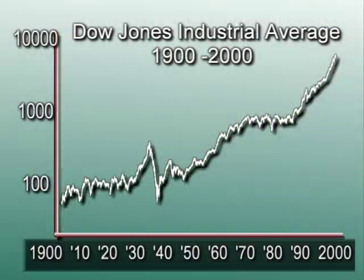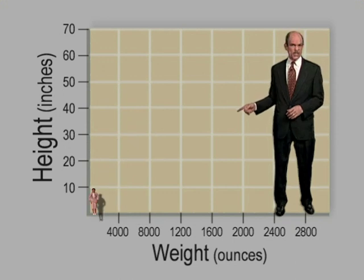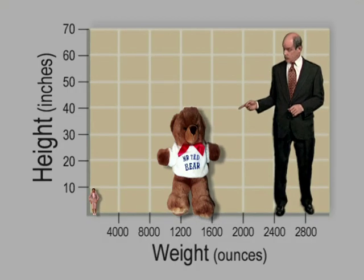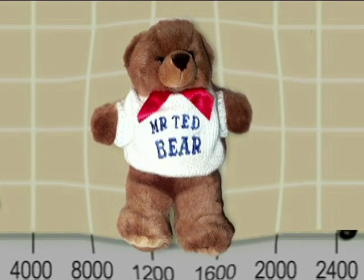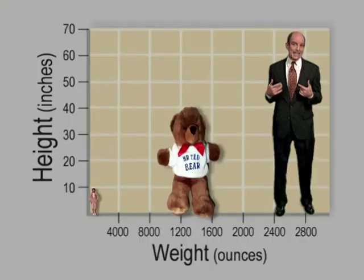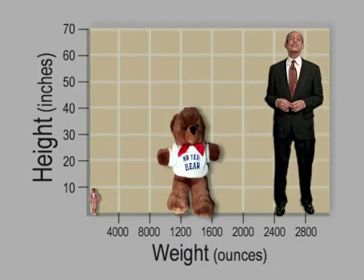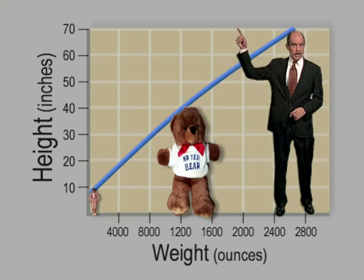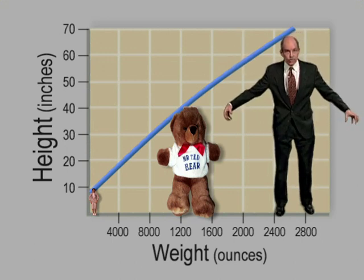Two-dimensional graphs can depict the relationship between any two variables, like stock prices and time, or height and weight. Ben is 9 inches tall and weighs about 2 ounces — being plastic, he doesn't have to worry about his weight. Ted is 40 inches tall and weighs about 1,300 ounces — he's been bulking up for a cold winter. And I'm 70 inches tall and weigh about 2,700 ounces. The relationship is again clear: the taller you are, in general, the heavier you're likely to be.